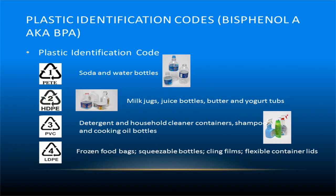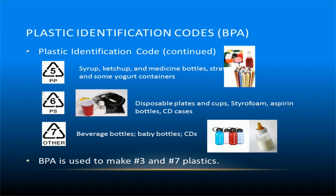Do you know what those numbers on the bottom of plastic bottles and containers indicate? These are plastic identification codes, and they identify the plastic resin from which a plastic product was made. Number 1 signifies polyethylene terephthalate, including soda and water bottles. Number 2 is high density polyethylene, including rigid items like milk jugs and butter tubs. Number 3 is polyvinyl chloride, including detergent and shampoo bottles. Number 4 is low density polyethylene, including frozen food bags and cling films. Number 5 is polypropylene, including syrup and ketchup bottles. Number 6 is polystyrene, including styrofoam and disposable plates and cups. Number 7 signifies other plastics, including beverage bottles and baby bottles.